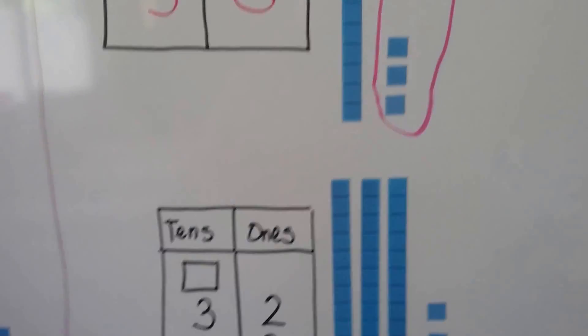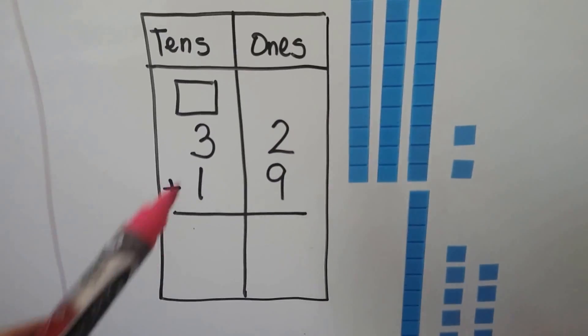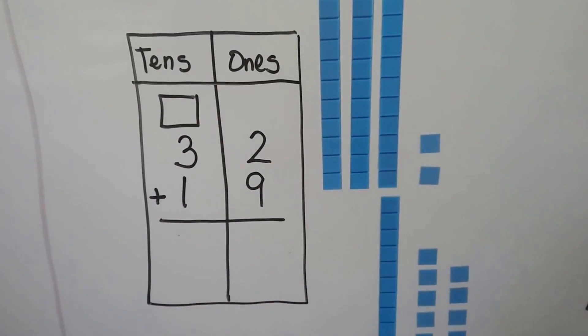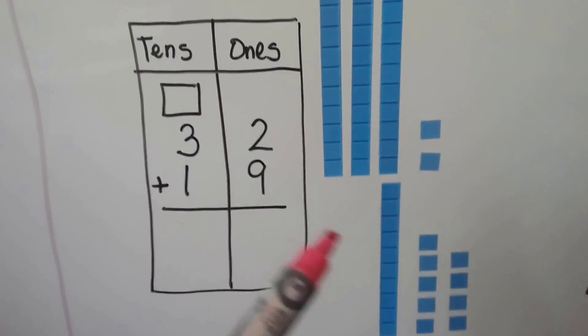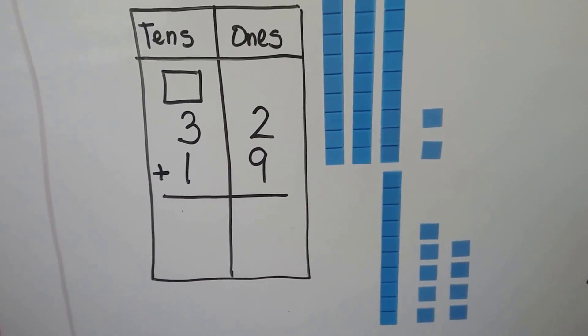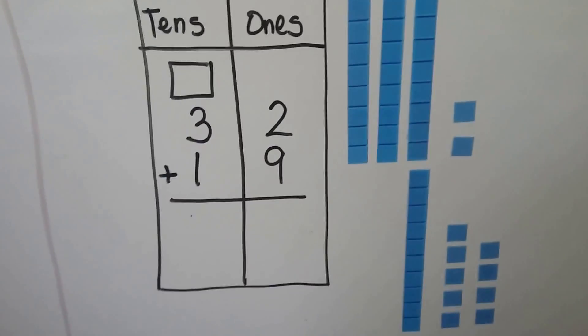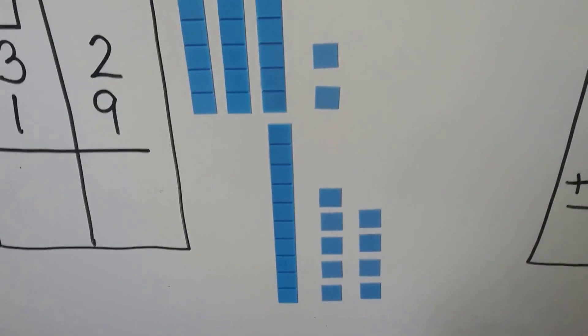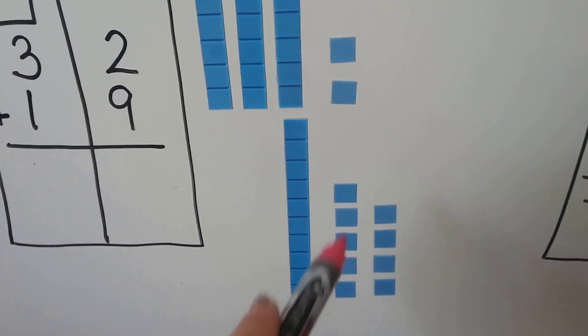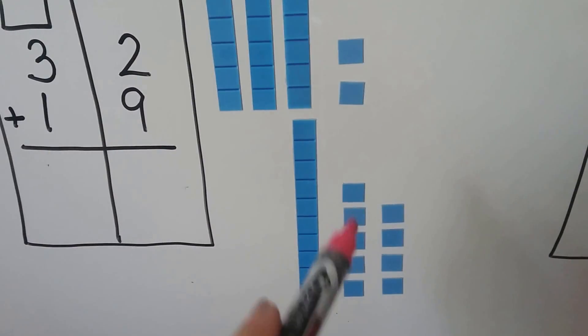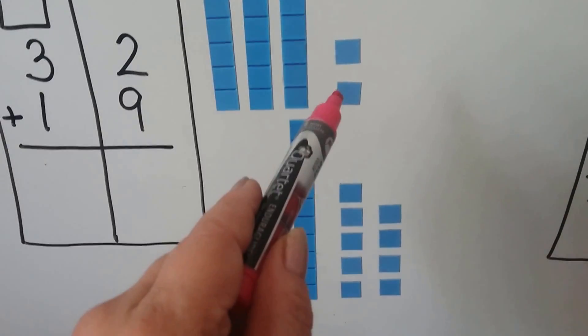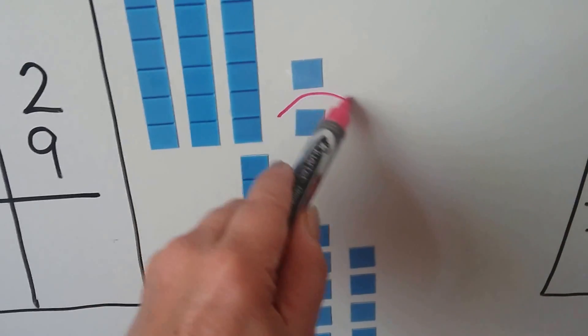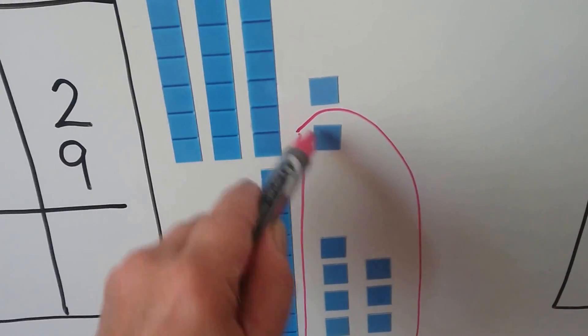Let's try it again. We're going to add 32 plus 19. For 32, we have 3 tens and 2 ones. For 19, we have 1 10 and 9 ones. We're going to circle the picture of ones to make a new 10. We have 9 here because that's a 19. We have 1 10 and 9 ones. We can take one of the ones from the 32 and circle it and make a 10.